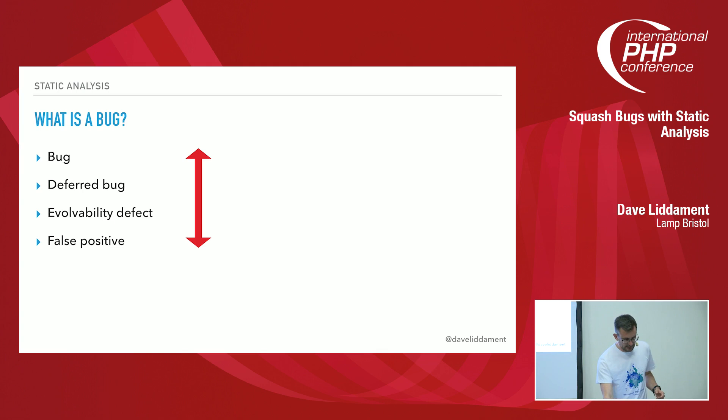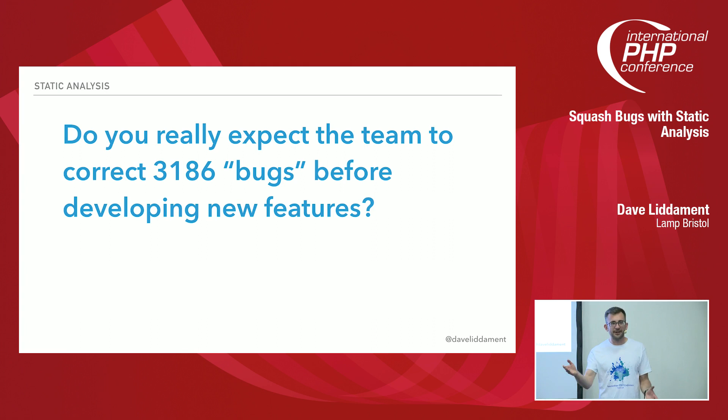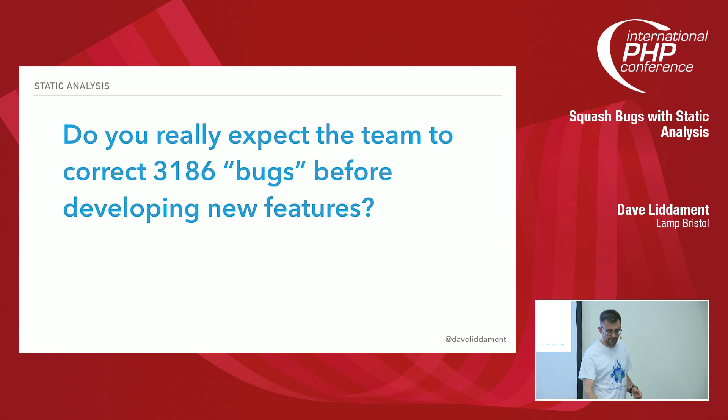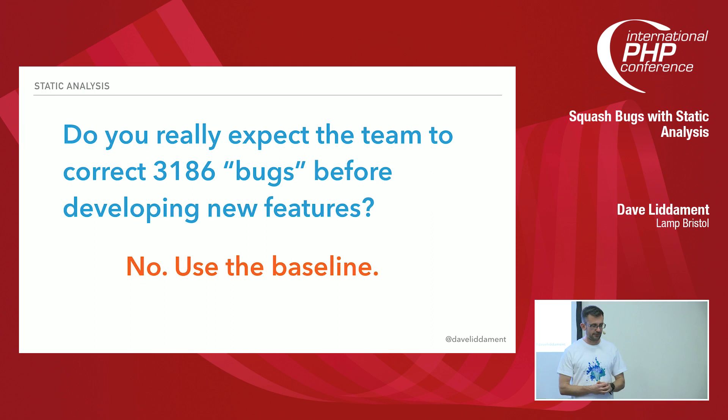You'll fix all the critical bugs, the genuine defects, and still have hundreds or thousands left. Someone would say to me, 'You don't really expect me to fix 3,000 bugs before we develop any new features.' Of course we don't. But the tool had a great feature: you could baseline all your bugs. You'd say, I've seen these all now, and I only want you to show me, as the code progresses, any new defects that have been introduced.